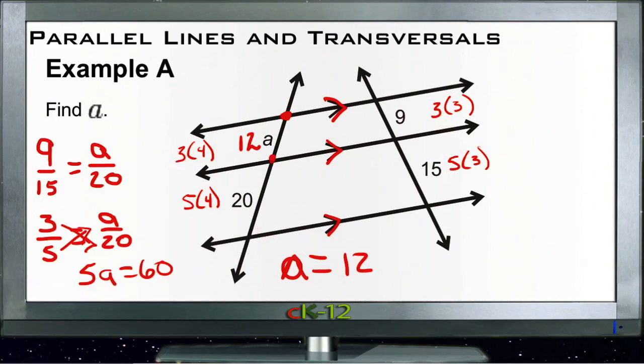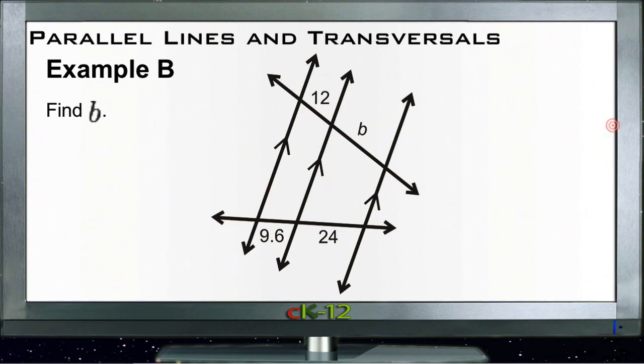Let's move on. Example B says we need to find little letter b, little letter b right here. That's the segment from this point to this point.